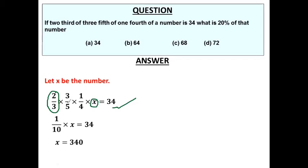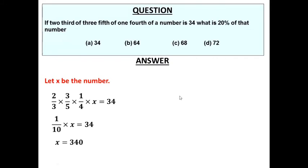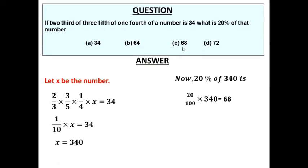When we solve, we cancel the 3s, then the 2 cancels with the 4, leaving 1/10. So (1/10) × x = 34, and cross-multiplying gives x = 340. But we need to find 20 percent of that number. 20 percent of 340 equals 68. So the correct option is answer C, 68.